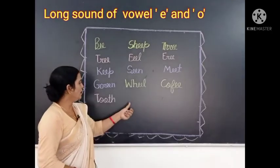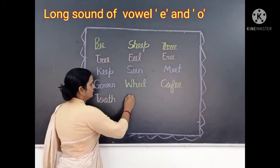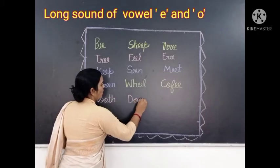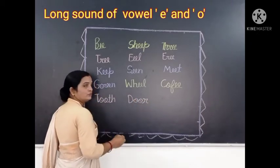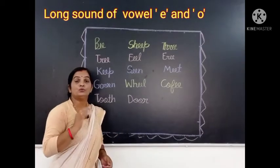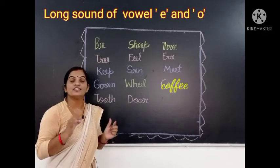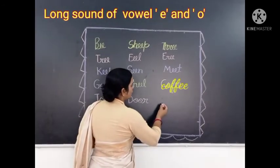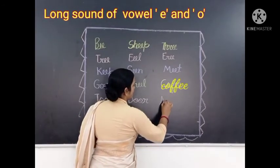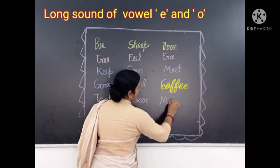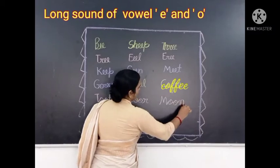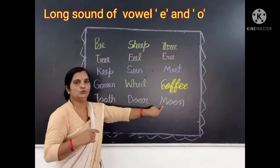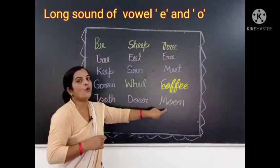Now the next word: D-double O-R. Door. Door means darwaja. Okay? Now write the next word: M-double O-N. Moon. Moon means chan. Moon. This is a long sound of vowel O word. Okay?